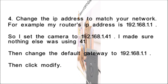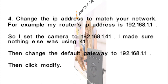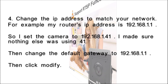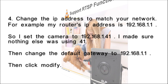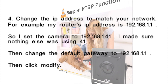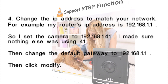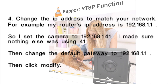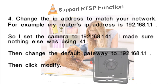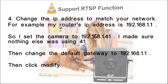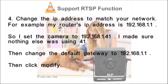Step four: change the IP address to match your network. For example, my router's IP address is 192.168.1.1, so I set the camera to 192.168.1.41 — I made sure nothing else was using 41. Then change the default gateway to 192.168.1.1, then click Modify.